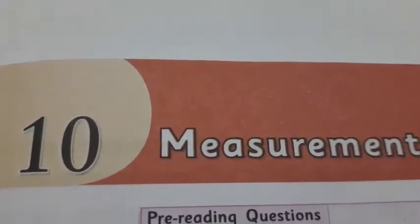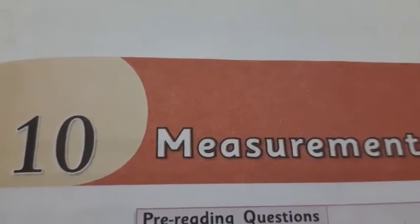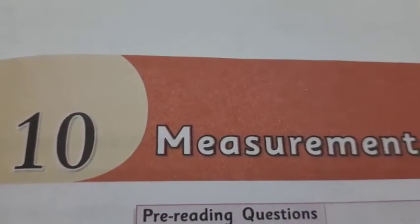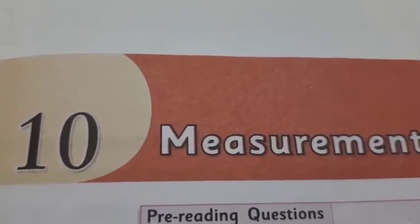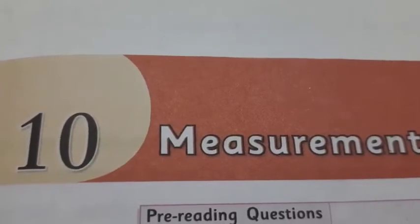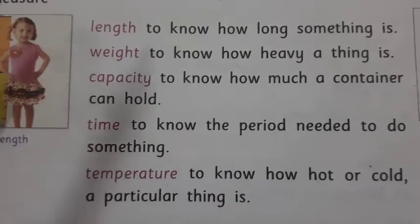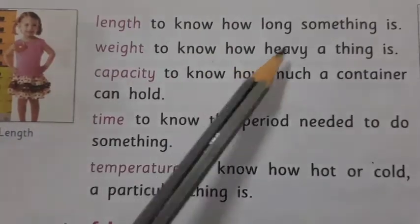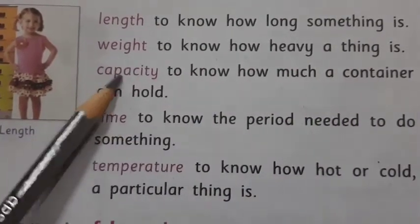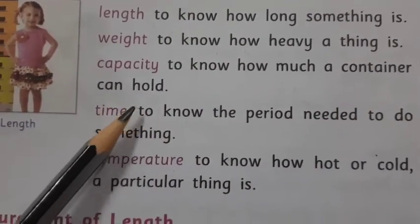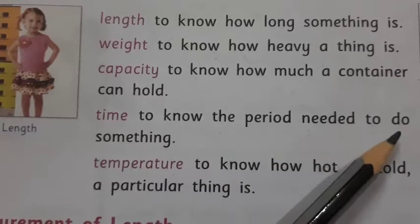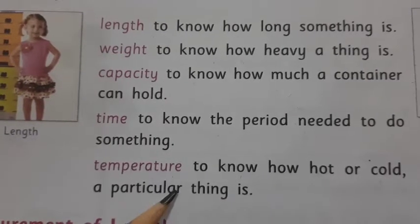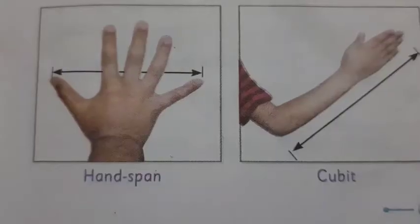Good morning children. Today we'll study lesson number 10: Measurement. Measurement is a system to compare a quantity with a standard unit, or to procure data on distance, weight, capacity, time, and temperature. We measure length to know how long something is, weight to know how heavy a thing is, capacity to know how much a container can hold, and time to know the period needed to do something. Temperature tells us how hot or cold a particular thing is.